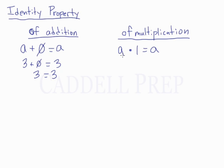So again, if a is 3, we have 3 times 1 should equal 3. And it does, 3 times 1 is 3, equals 3.